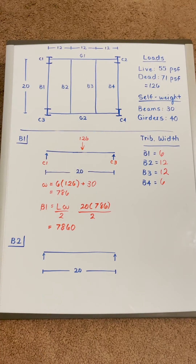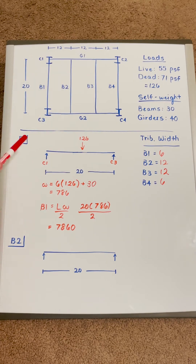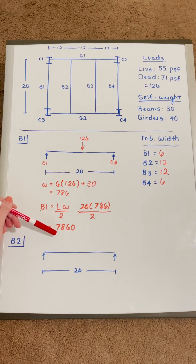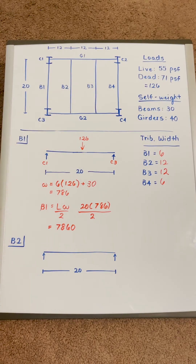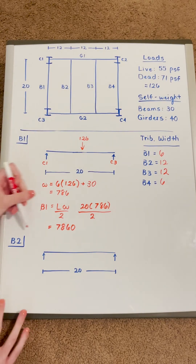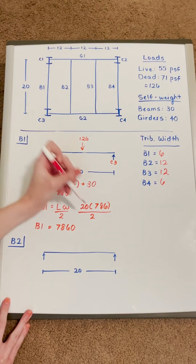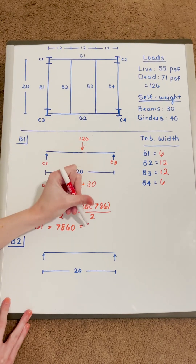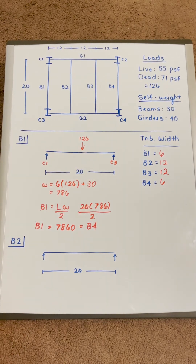Before moving to beam 2, beam 1 is exactly symmetrical in the structure, which means the reaction force is going to be the same. So beam 1 equals 7,860, which also equals beam 4.